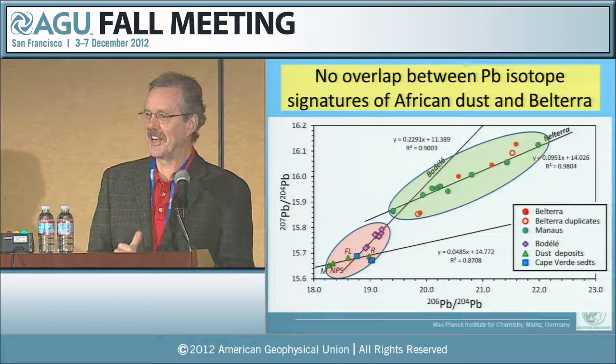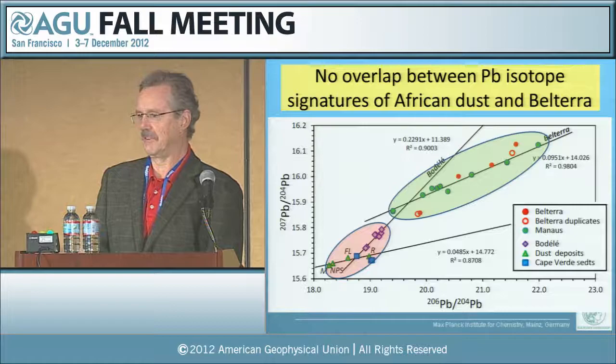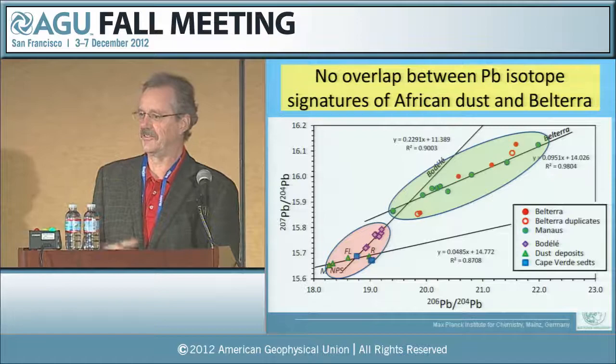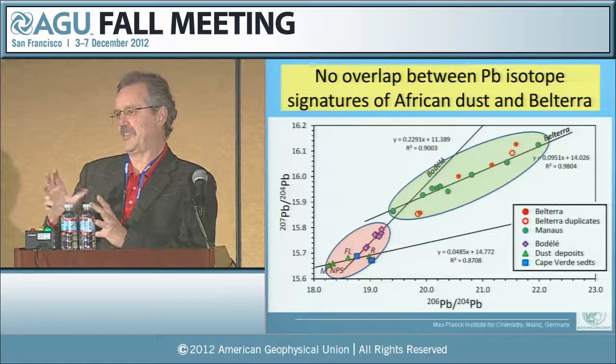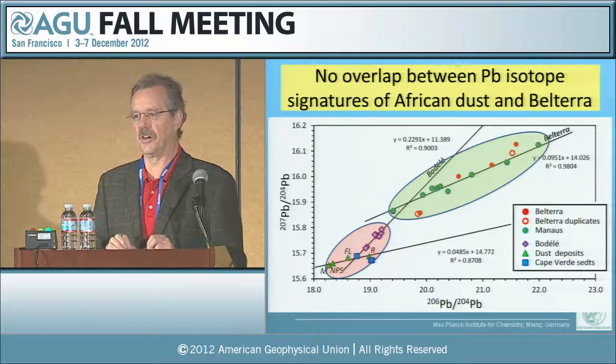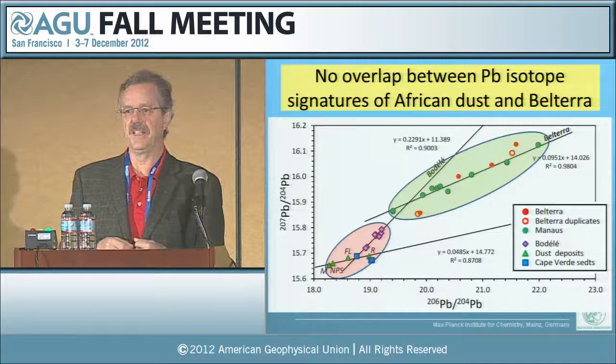Another nail in the coffin of our hypothesis, and a very powerful nail, comes from lead isotopes. Lead isotopes originate from some lead already present at the formation of the earth, plus lead isotopes created by the decay of uranium and thorium. Each geological terrain has its own lead isotope signature depending on how it was originally formed and how much uranium and thorium it contained to produce radiogenic lead isotopes over its history.